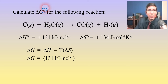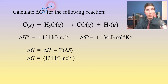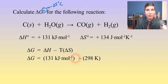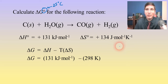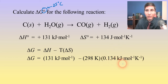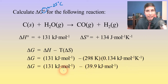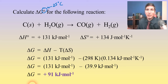The degree sign tells us these are standard conditions. One of those standard conditions is 25 degrees Celsius, which means we're at 298 kelvins. Delta S is 134 joules per mole per kelvin, but we need to convert to kilojoules, so we divide by 1,000 to get 0.134 kilojoules per mole per kelvin. Multiplying T by delta S and subtracting, we get that delta G is positive 91 kilojoules per mole.